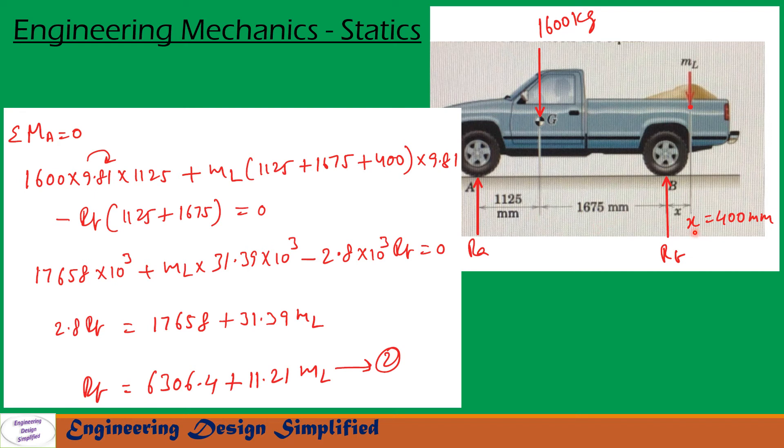So that is written here. Minus, so this RB creates counterclockwise moment. So we have taken negative. So RB into this distance, 1125 plus 1675. That is written here. RB into 1125 plus 1675. So that is equal to 0. After simplifying this equation, we will get finally RB equal to 6306.4 plus 11.21 into ML. Let us call that equation 2.